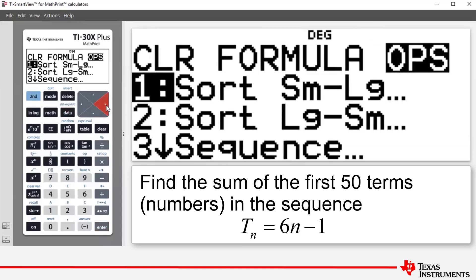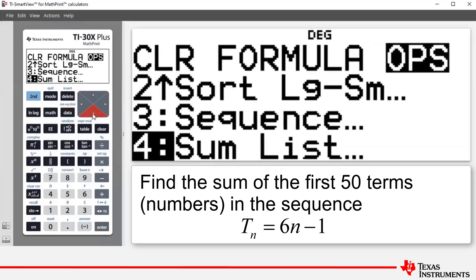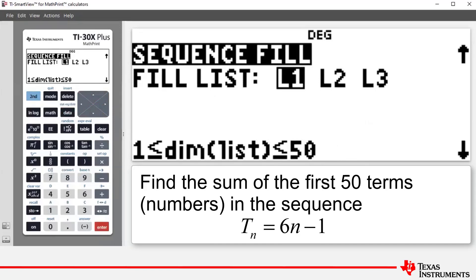You can see that there are, we can sort the list from smallest to largest value, from largest to smallest value. We can create a sequence and we can find the sum of a list. So what we're going to do is we're going to create a sequence. So by highlighting 3, pressing 3 or press enter, we get to the sequence fill set of commands.